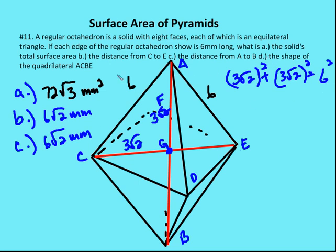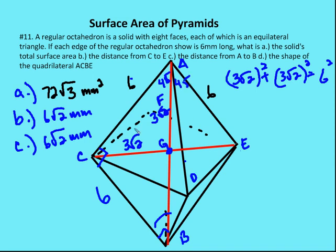The final question asks us to identify the shape of quadrilateral A, C, B, and E. All four side lengths are six, so we're looking at either a rhombus or a square. Since AB equals six root two and each side is six, the angles at C, B, G and C, A, G work out to 45 degrees each. That means the angles of the quadrilateral are all 90 degrees, so the answer is a square.